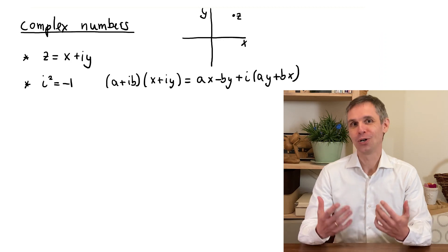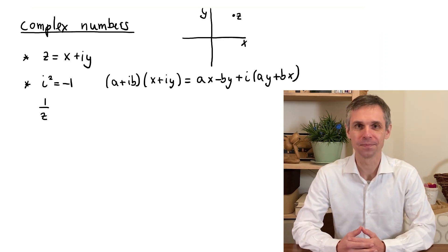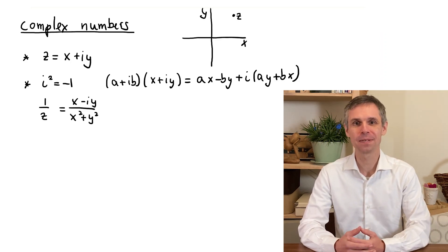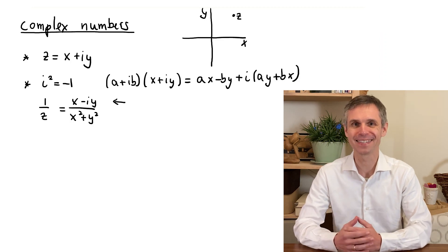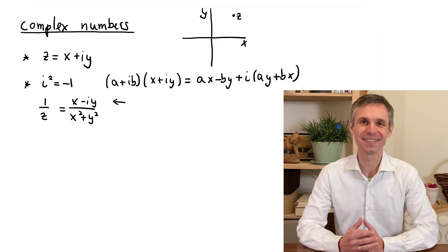And you can also divide, for instance calculate the inverse of a complex number. In the result, you find in the numerator the original complex number, but with i replaced by minus i. This is known as the complex conjugated number.